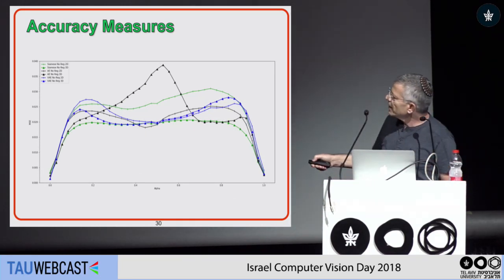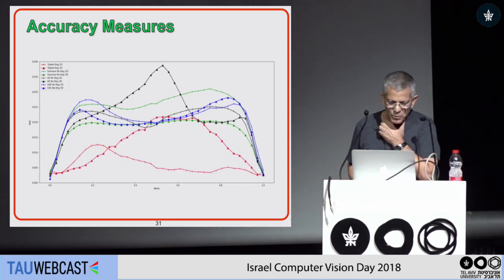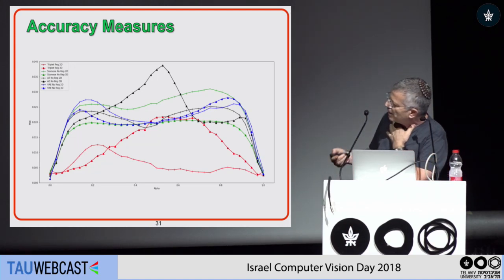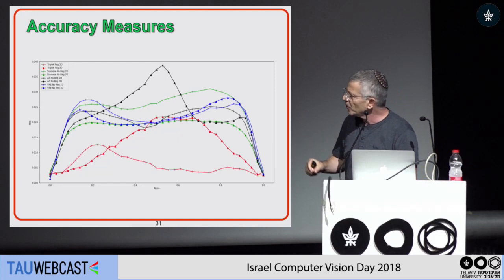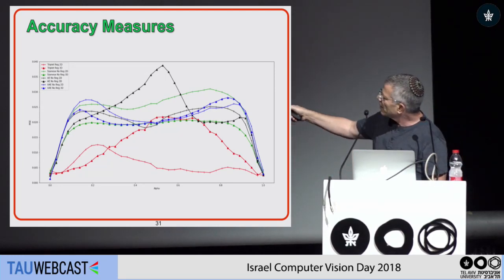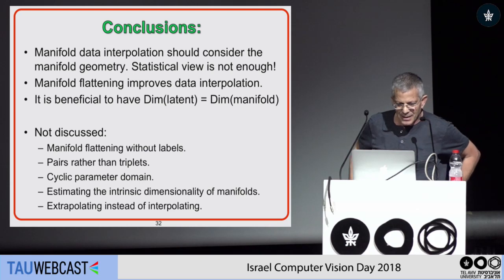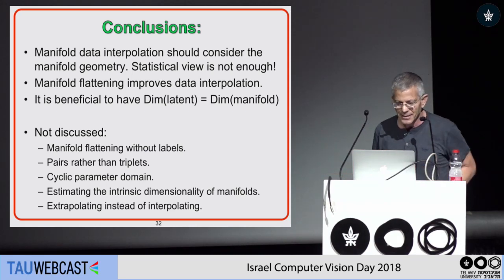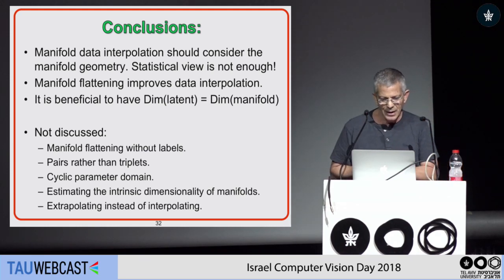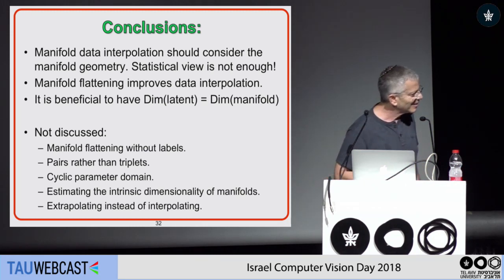Looking at accuracy measures: with a standard or variational autoencoder we get one result, but when we apply the triplet autoencoder the result improves significantly. Interestingly, applying the triplet autoencoder in two-dimensional space — the intrinsic dimensionality of the manifold — gives much better results than applying it in three dimensions. To conclude: manifold data interpolation should consider the manifold geometry; it is not enough to just apply statistical tools. Manifold flattening improves data interpolation, and it is beneficial to set the latent dimensionality equal to the intrinsic dimension of the manifold.